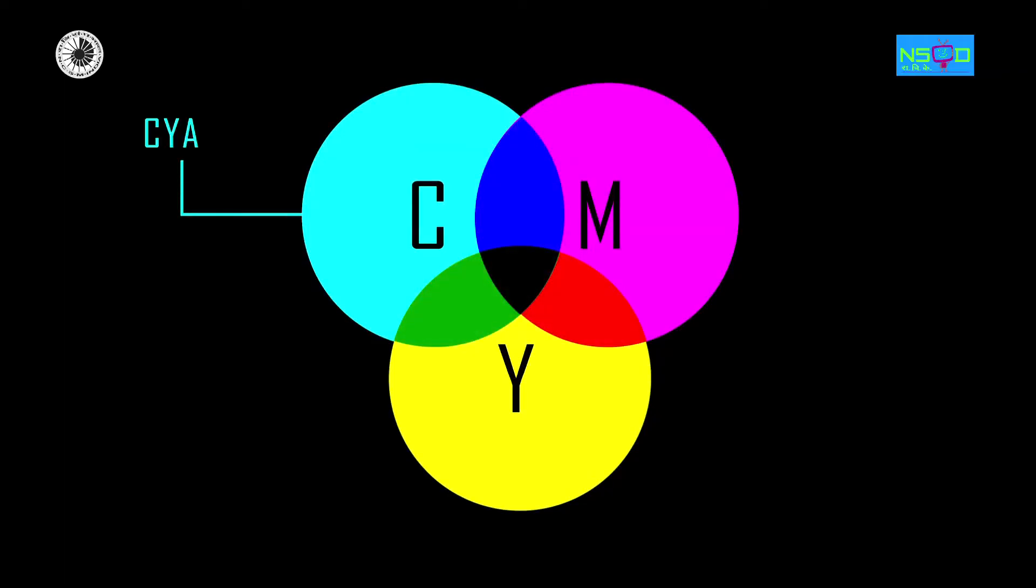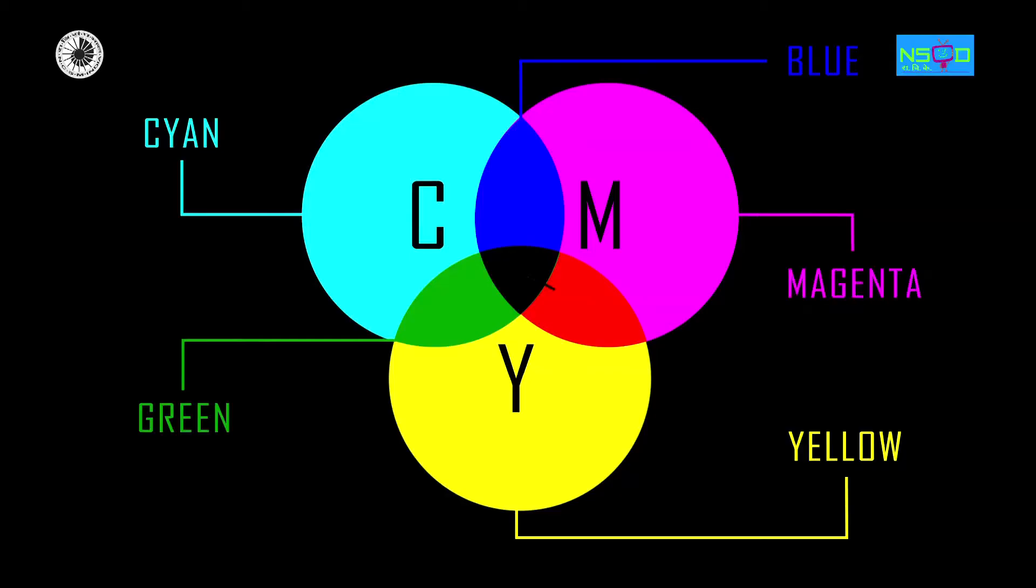The combinations of two of the three primary colors of light produce the secondary colors of light. The secondary colors of light are cyan, magenta and yellow. The secondary colors of light are the primary colors of pigments or dyes.